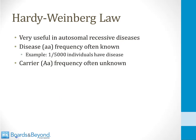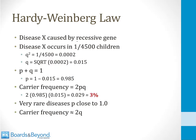One of the places where the Hardy-Weinberg law is very useful is in autosomal recessive diseases. These are rare conditions, and in these diseases, the disease frequency is often easy to determine. For example, if the disease version of the gene is lowercase a, and a person has to have two copies of lowercase a to develop disease, then it's fairly easy to figure out that one in five thousand individuals have disease because they are sick and brought to medical attention. What's not known is the carrier frequency — how many people are walking around with one normal copy and one diseased copy — and this can be determined by the Hardy-Weinberg law. So let's suppose disease X is caused by a recessive gene and occurs in one in 4500 children.